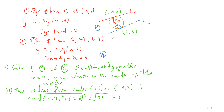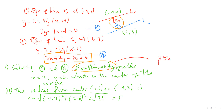Similarly, for Line 2, we know the gradient of the radius and the point of tangency, which is (6, 3). So we can write the equation of line R2. Now we have two equations — one for R1 and one for R2 — and we can solve these simultaneously. Solving R1 and R2 simultaneously gives us the point of intersection, which is nothing else but the center of the circle.